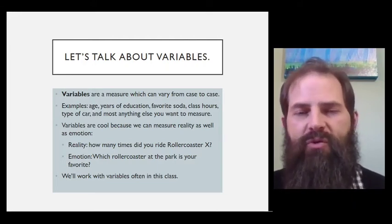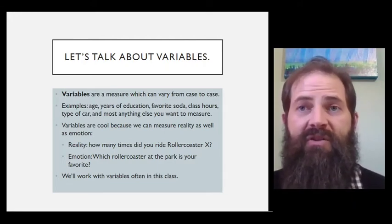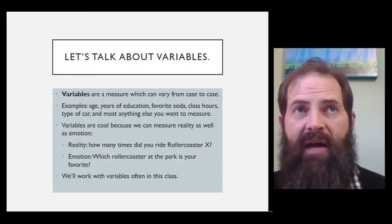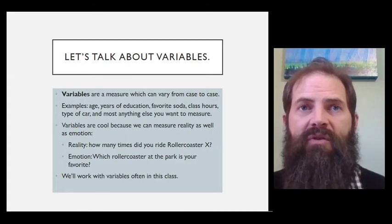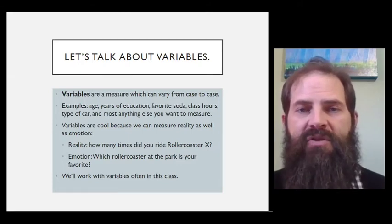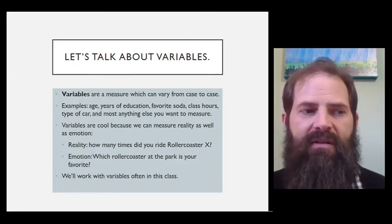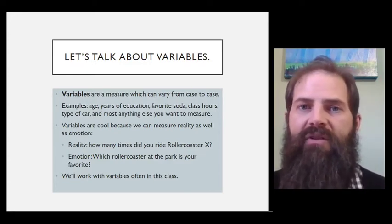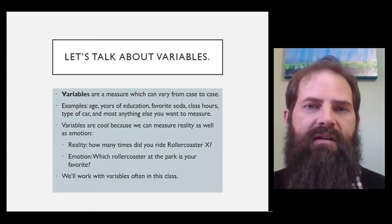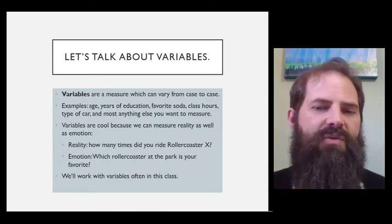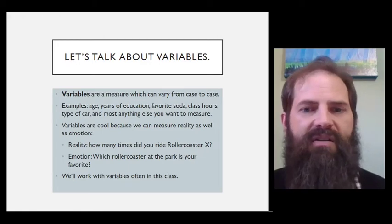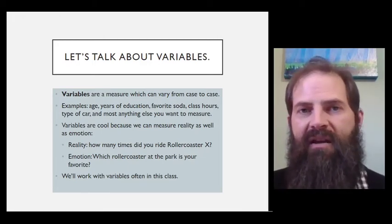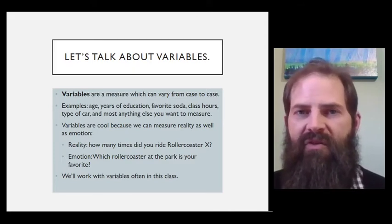Now variables are really cool for sociologists because they do a couple of things for us. They can measure reality, things that have happened or will happen in the future. So for example, how many times did you ride a particular roller coaster? That's a statement of fact. You rode it 15 times. Okay, well I've measured the reality of how often you use that roller coaster. But I can also measure emotions with a variable. Which roller coaster at the park was your favorite.